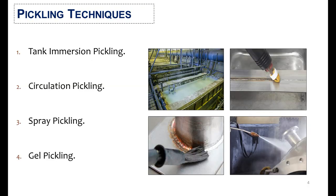There are four techniques of pickling. First is tank immersion pickling, in which the vessel is immersed in a tank containing the pickling solution. Second is circulation pickling, in which the pickling solution is circulated through the pipes. Third is spray pickling, where spray nozzles are used to apply the pickling solution on the vessel. Fourth is the manual process called gel pickling, where brushes are generally used to apply the pickling solution on the vessel.